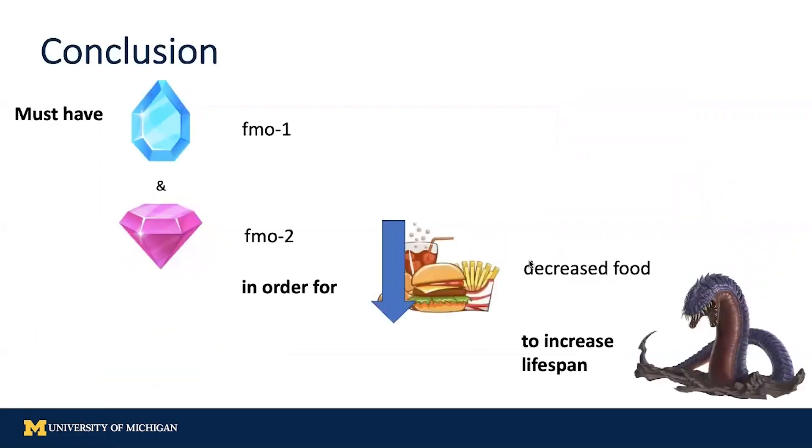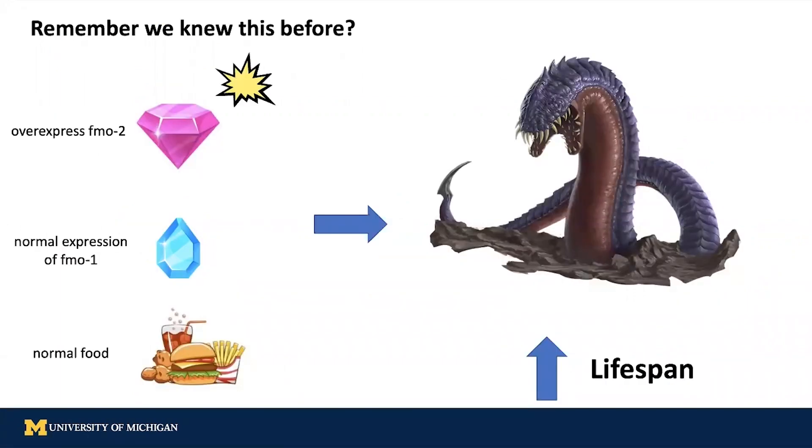Together with our previous knowledge, we come to this conclusion that both the blue gem and the pink gem are necessary for food restriction to increase lifespan. As a refresher of our previous knowledge, we knew that having a super pink gem with other things remained the same would give us a long-lived worm monster.